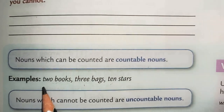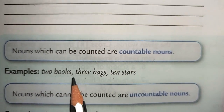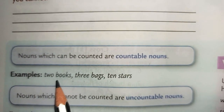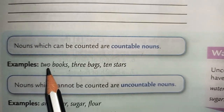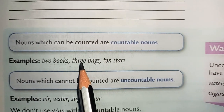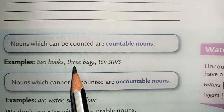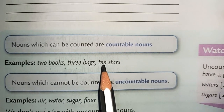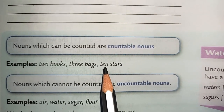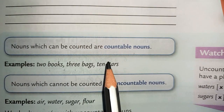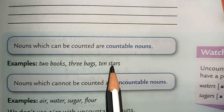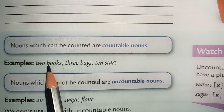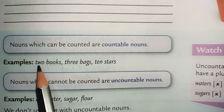For example: two books — I am talking about two books, so that is countable. If I say three bags, again they are countable. If I say ten stars, again they can be counted. So things that we have counted — ten, three, two — we were able to count them, so they are countable nouns.